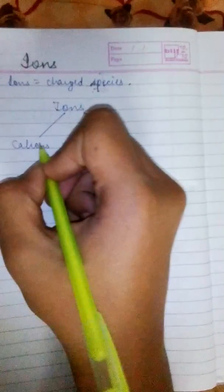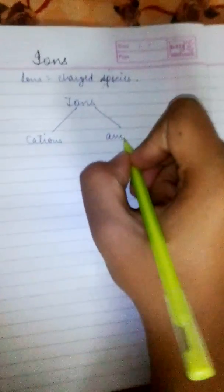Ions, they are basically charged species. So, ions, they are of two types, cations and anions.